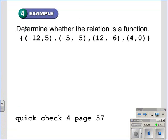One way to do that would be to create a mapping, like we did in example three. We list off the domain values, the different domain values: negative 12, negative 5, 12, and 4.